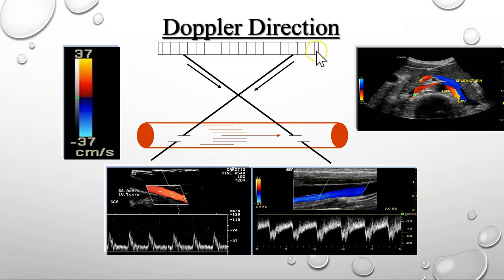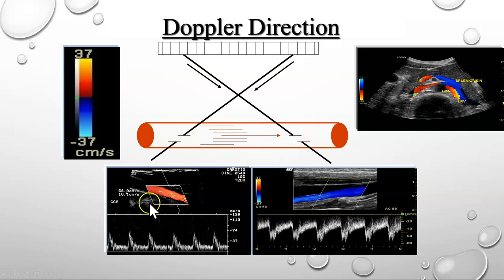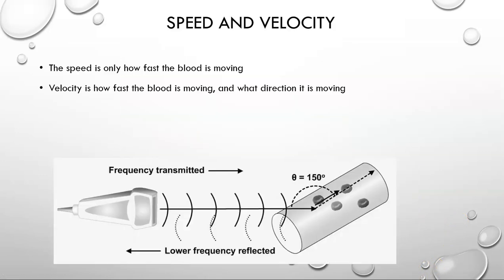When discussing Doppler direction relative to the transducer, we're concerned with the insonation path and where we're measuring in the Doppler gate. If the blood is moving from left to right in the insonation path, the blood is moving toward the transducer. Speed tells us how fast something is moving; velocity tells us how fast and the direction. With Doppler, we need to know the velocity because that gives us both the speed and direction.